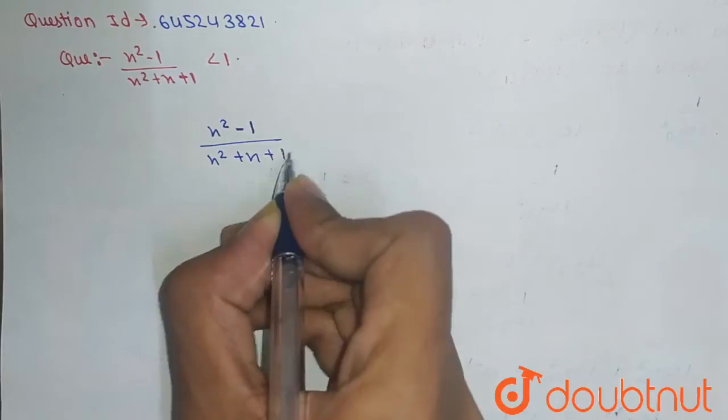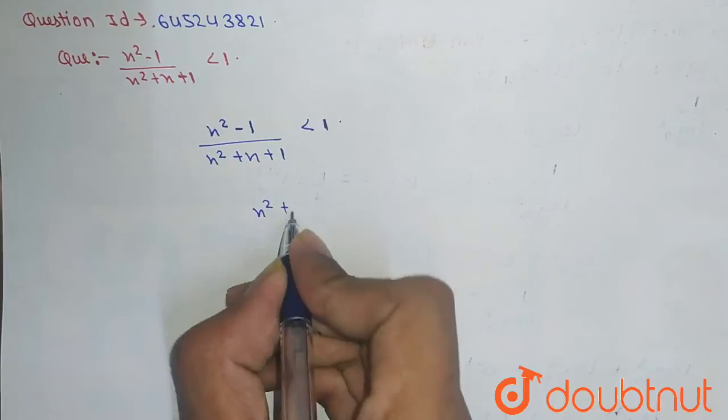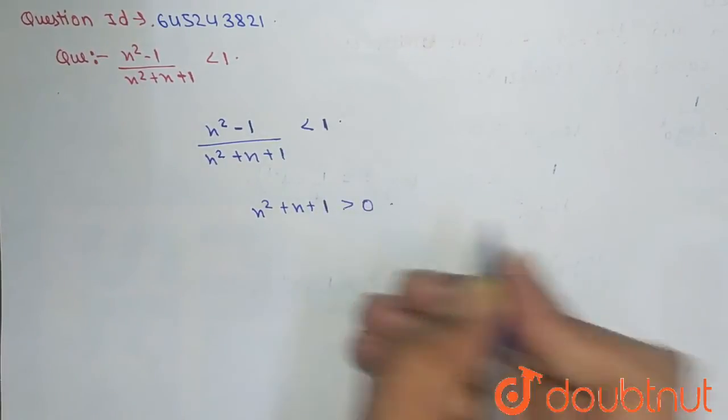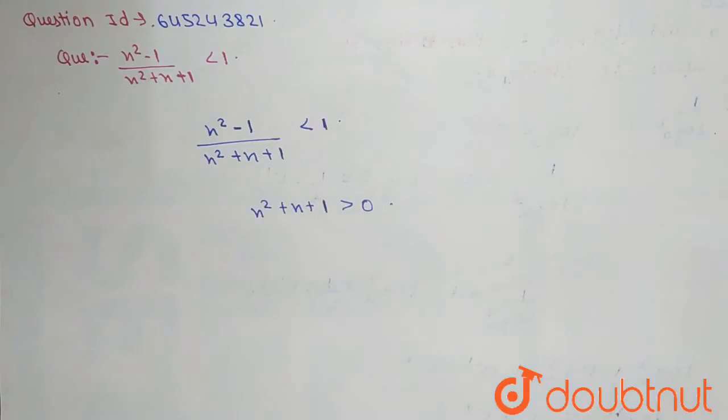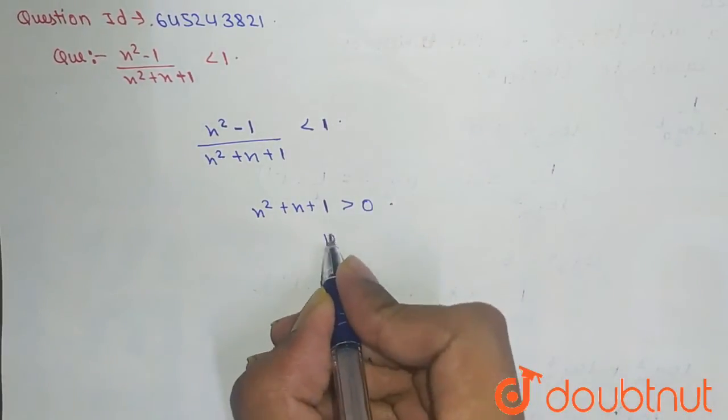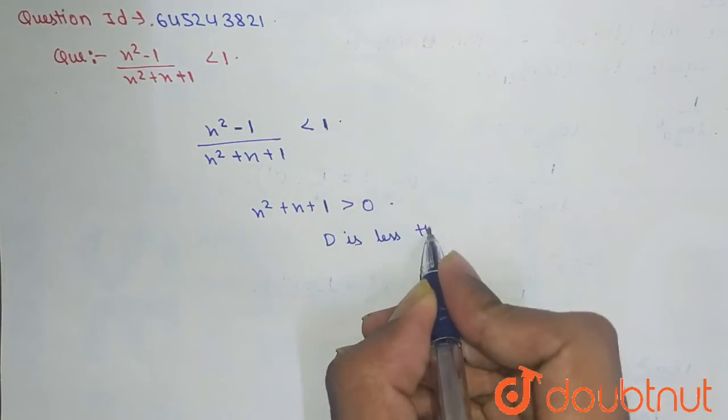X plus 1 and this will be less than 1. So friend, as we know that X square plus X plus 1, this will be greater than 0. This will be greater than 0 because the value of D here is less than 0.